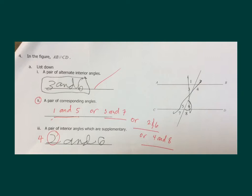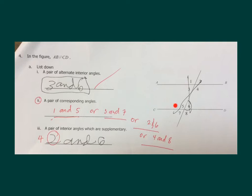Interior angles that are supplementary — if you look at the diagram, the two parallel lines create an interior region in between. The interior angles are 3, 4, 5, and 6. Some of the interior angles are alternate interior, but there are also interior angles that are supplementary, meaning they add up to 180. Based on the diagram, those are 4 and 6, or 3 and 5 — they are on the same side.